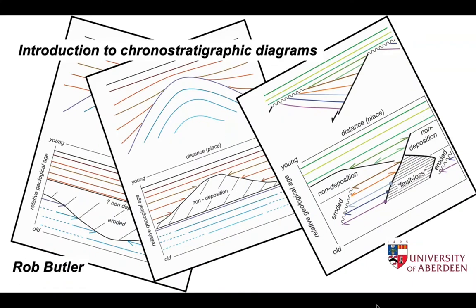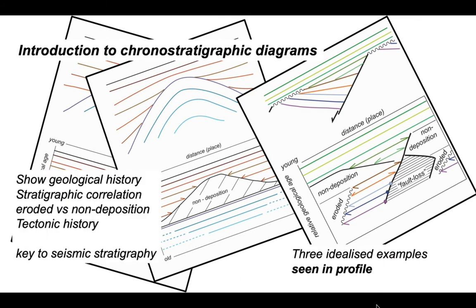Chronostratigraphic diagrams, or chronostrat diagrams, are key tools for demonstrating the geological evolution implied by cross-sections or seismic profiles. They show the geological history, allow us to assess stratigraphic correlation, identify the difference between eroded areas and areas where particular strata were not deposited, and they're particularly useful in demonstrating a tectonic history. In fact, they're the key to interpreting seismic stratigraphy.